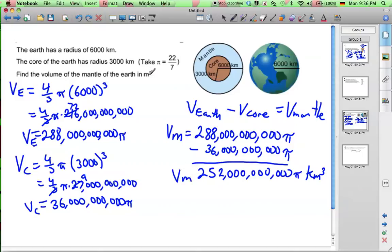And the question asks for cubic meters. So in order to change to cubic meters, now if it was just meters, we'd multiply by 1,000. But since it's cubic meters, we have to multiply by 1,000 cubed. That means we're going to have 9 more zeros.